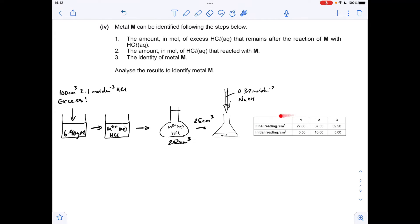We've also got the titration results. The first thing I'm going to do is work out the mean titer from these results, and then I'm going to use that to work out how many moles of sodium hydroxide were involved in the titration.